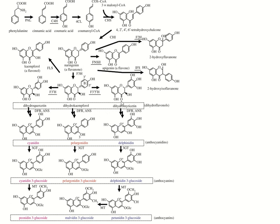Dihydromyricetin gives delphinidin. Dihydrokaempferol gives pelargonidine. Dihydroquercetin gives cyanidine. Cyanidine, pelargonidine, and delphinidin are collectively called anthocyanidins. The examples of anthocyanidins are cyanidine, pelargonidine, and delphinidin — CPD. The examples of dihydroflavonols are dihydroquercetin, dihydrokaempferol, and dihydromyricetin.